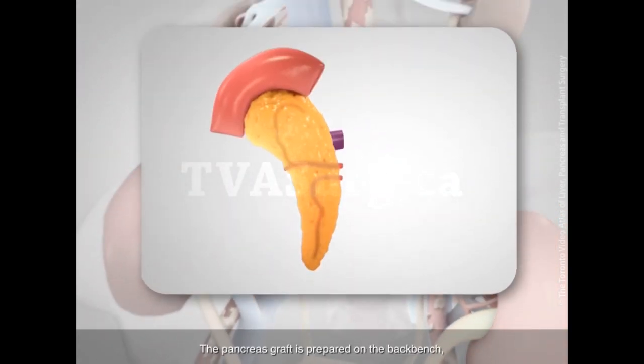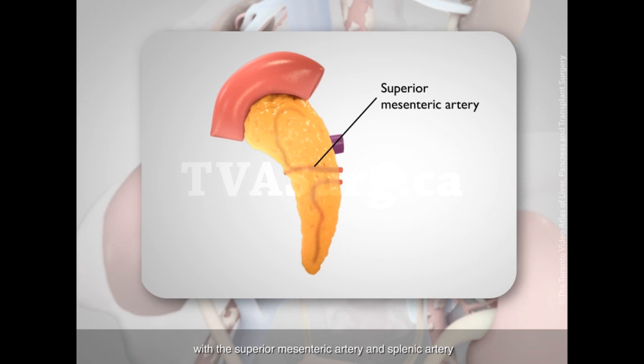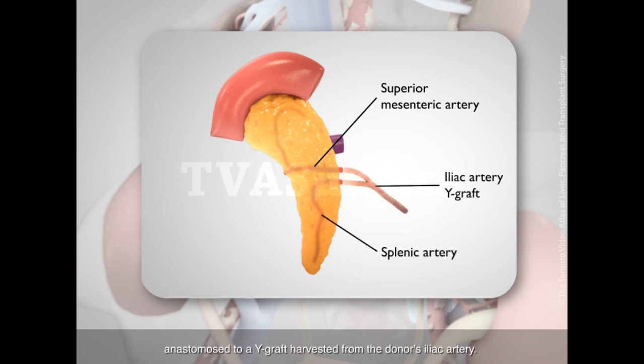The pancreas graft is prepared on the backbench, with the superior mesenteric artery and splenic artery anastomosed to a Y-graft harvested from the donor's iliac artery.